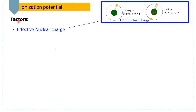Now let's discuss the factors affecting ionization potential. The first factor is effective nuclear charge. If there is a greater nuclear charge on the nucleus, it is very difficult to remove an electron from the atom, because there is a stronger electrostatic force of attraction between the nucleus and the outer shell electron. Hence, you need a large amount of energy to remove that electron. For example, the first ionization energy of helium is much greater than that of hydrogen, because helium has two protons with a greater force of attraction on its outer shell electron compared to the single proton of hydrogen.